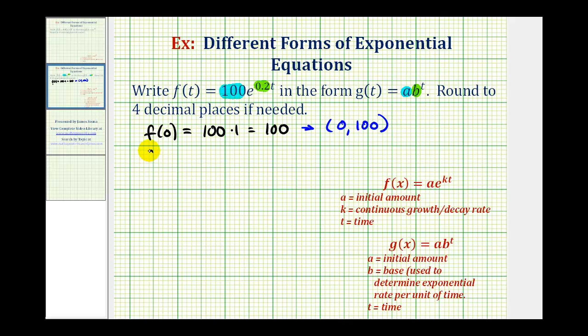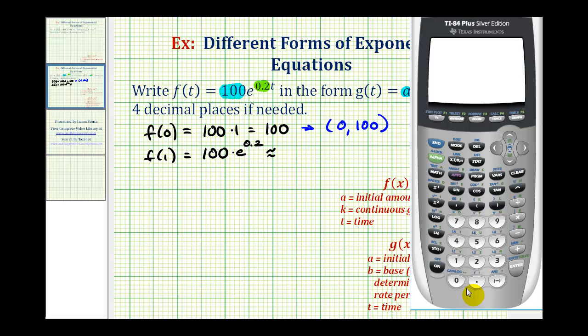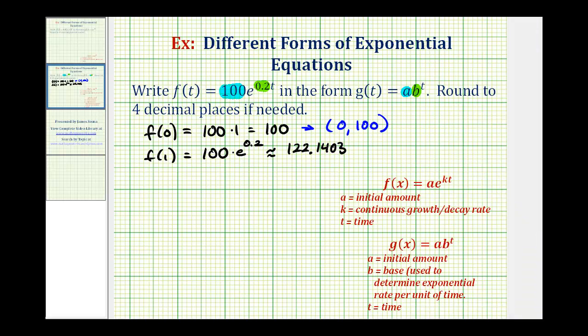Let's also use f of 1. So we would have 100 times e raised to the power of 0.2. We'll get our decimal approximation here. 100 times e raised to the power of 0.2 will be approximately 122.1403. This represents the point when the t coordinate is 1, and the y coordinate is 122.1403.